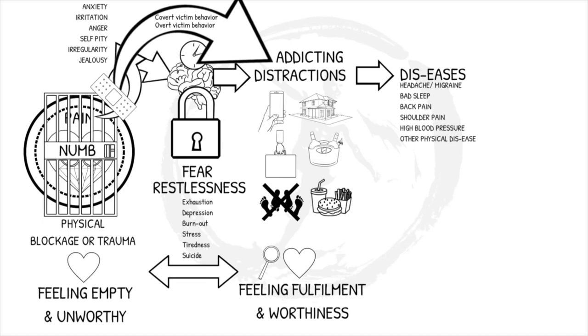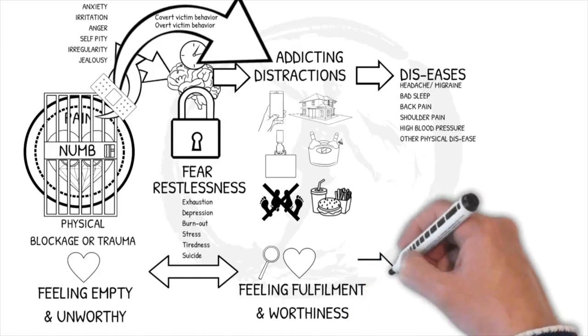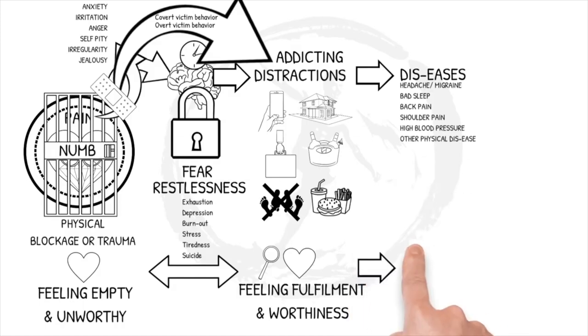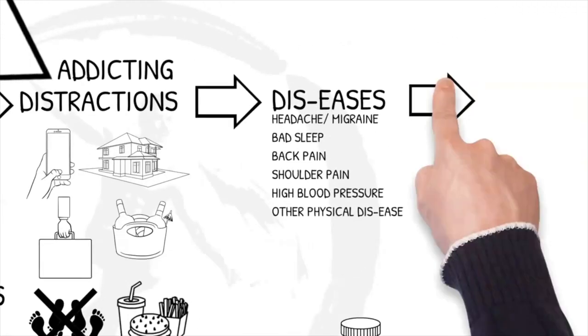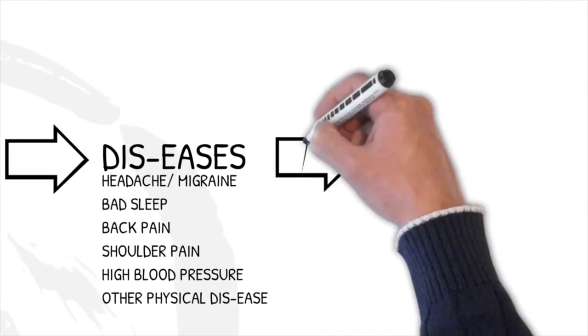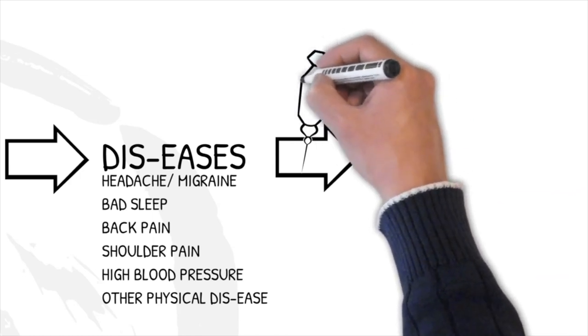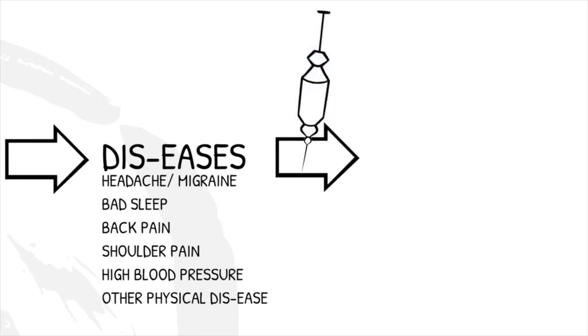If we are still not aware of the fact that our symptoms are our very valuable warning signals, we might choose to suppress our helping warning signals with medication and therefore keep blocking our feelings and core even more. Although medication can be life-saving in acute conditions, if we keep blocking our core and feelings, our body is being injected with constant fight and flight chemicals like stress cortisol and adrenaline that knocks our body out of balance.